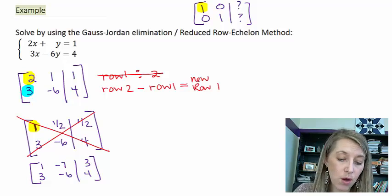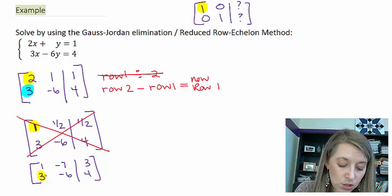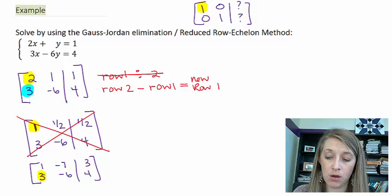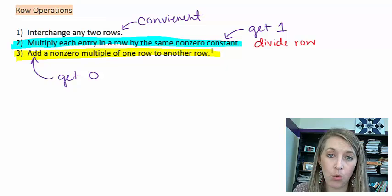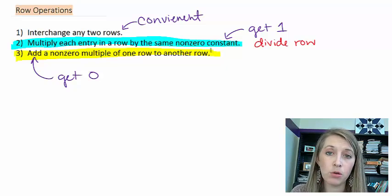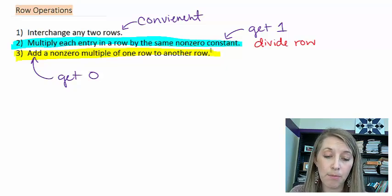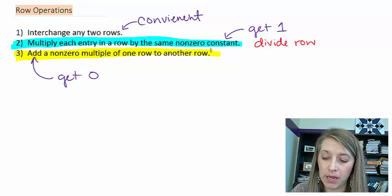I've got my 1 on the top left. The next thing I want to do is make this 3 into a 0. What I typically recommend is option number 3. When you eliminate something, you multiply the other row by a number and you add it to the row that you're trying to eliminate.